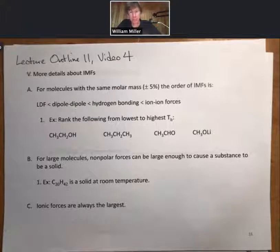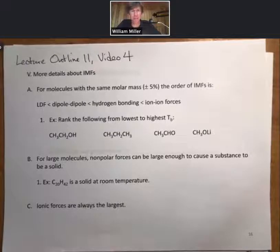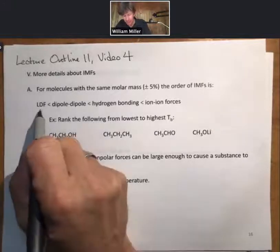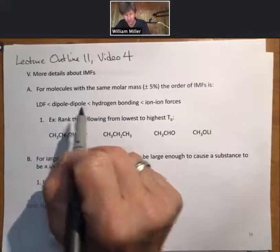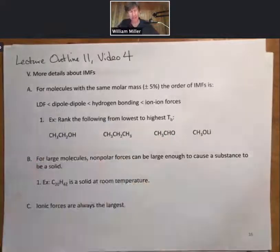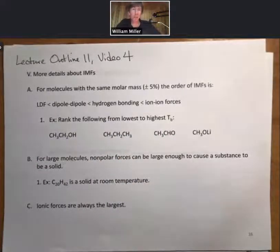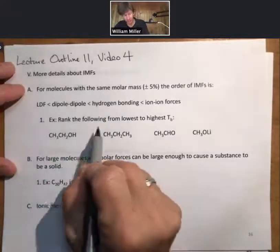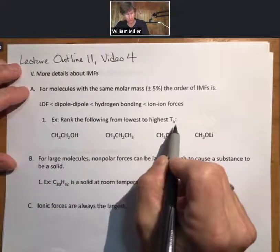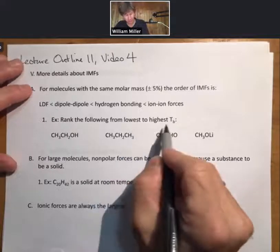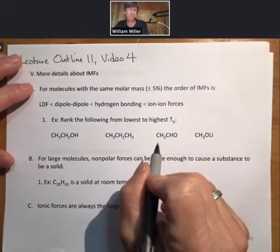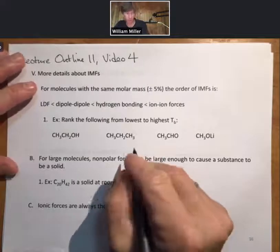For molecules with the same molar mass, plus or minus five percent, the order of IMFs is: LDF, dipole-dipole, hydrogen bonding, and then ion-ion forces. A typical question you might get is to rank the following from lowest to highest boiling point. Lowest to highest boiling point corresponds to lowest to highest total intermolecular forces.